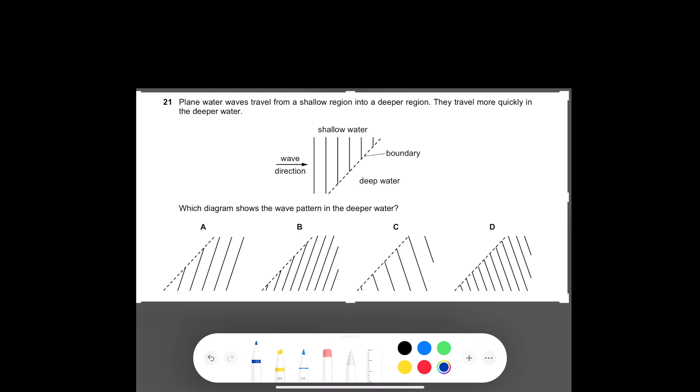Plain water waves travel from a shallow region into a deeper region. They travel more quickly in the deeper water. Which diagram shows the wave pattern in the deeper water? I want to draw your attention that when the waves are transferred from the shallow water to deep water, the speed of waves increases.